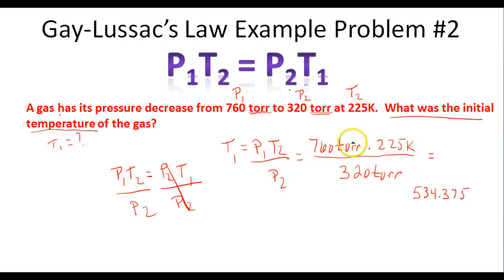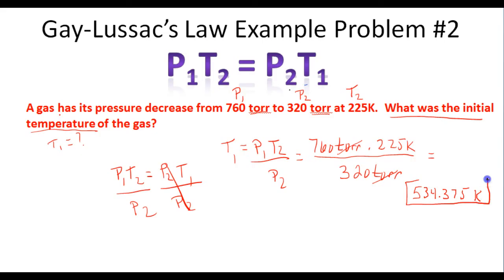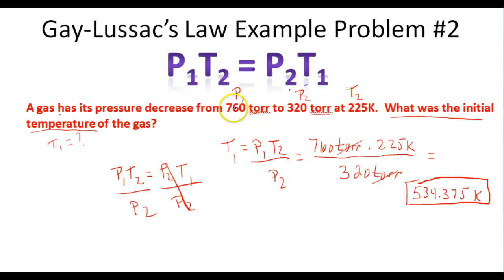The torr units cancel, leaving Kelvin. So the initial temperature of this gas must have been 534.375 K. As the temperature decreases to 225 K, the pressure also decreases from 760 to 320 torrs.